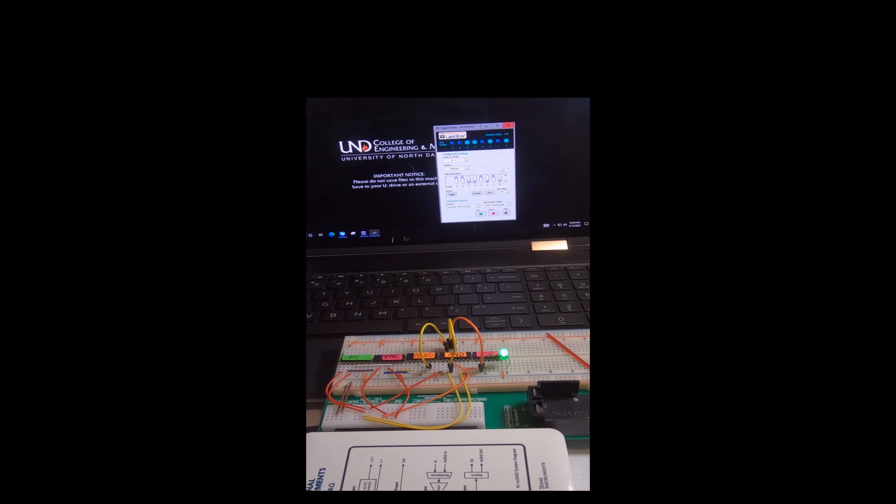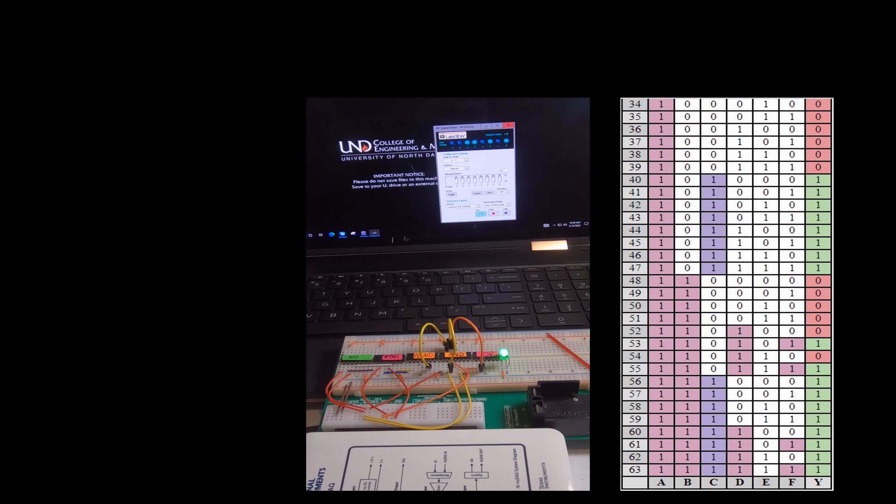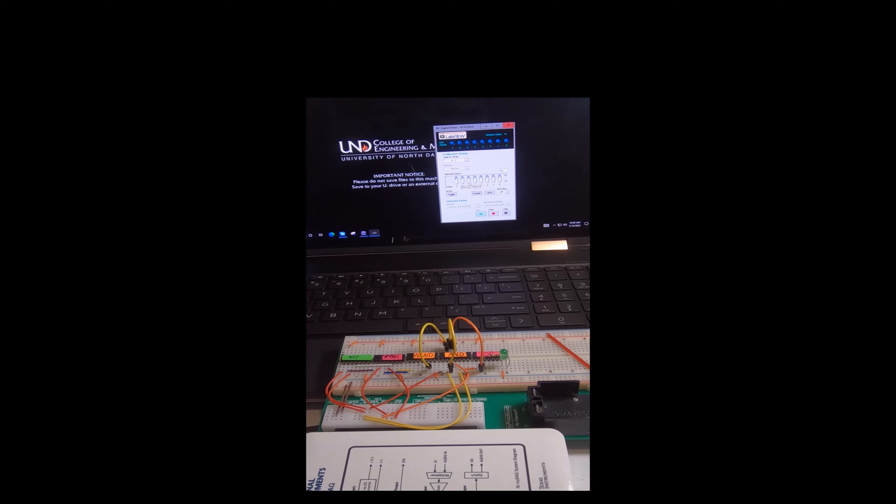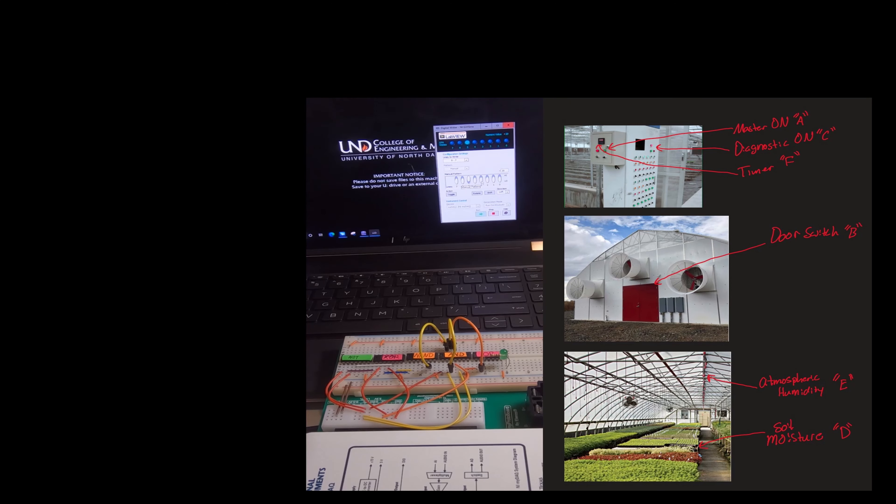So to prove out that the circuit matches the intended truth table, let's hit run here. I can simulate that the master on switch, so A is high, and we'll just do the diagnostic switch. Say we had an issue in the greenhouse and we wanted to diagnose a hardware fault. Master switch on, diagnostic switch on. You can see that the LED came on. So in this instance, the irrigation system would be on. And you can see that we can change any of the other inputs, but we're disregarding those statuses.